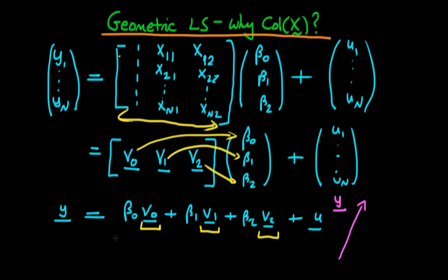And so what these parameters tell us is that in order to get as close there as possible, we go along V0, and we go beta naught times V0 along that one.